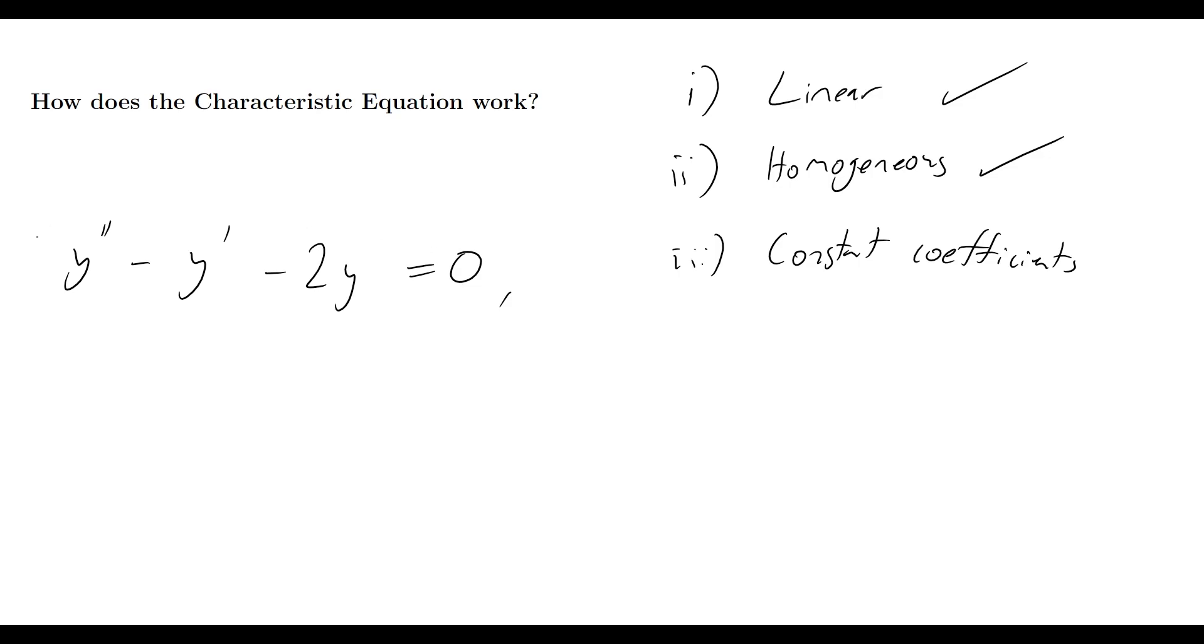Well, yes, it does. We've got a one over here, a minus one, and then a minus two as well, of course. So clearly, as it satisfies all three conditions of using the characteristic equation method, that's what we're going to go ahead and use.